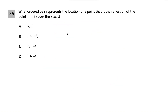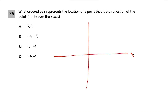Question 26: what ordered pair represents the reflection of point negative 4, 6 over the x-axis? If you know the reflection rules, great. Otherwise sketch it out. Plotting negative 4, 6: go left 4 and up 6. When we reflect over the x-axis, we use the x-axis as our mirror line. Count the distance from the point to the x-axis: that's 6 units up.